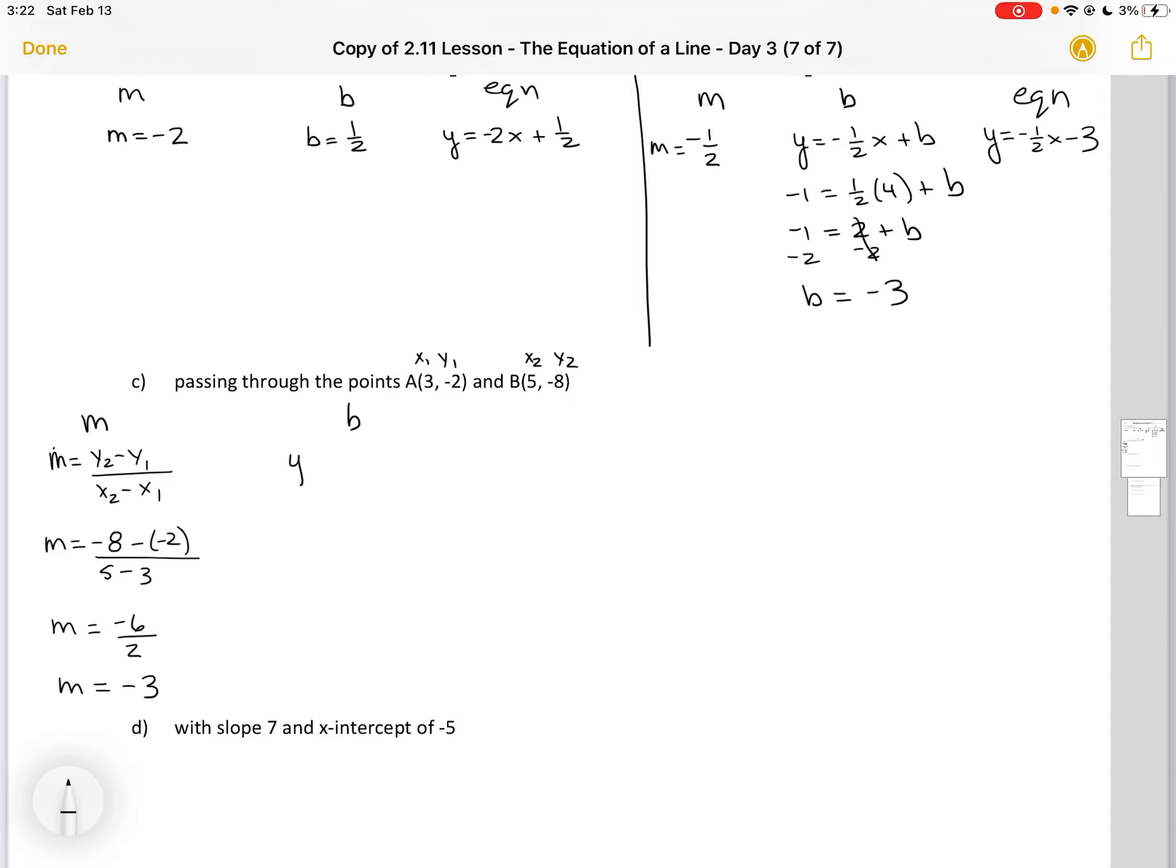I don't know what my y-intercept is in this case, but I can substitute in one of my points. I'm going to choose the point A again because the numbers are smaller this time than B. So minus 2 equals minus 3 times 3 plus b. Then I'm going to add 9 to both sides to get b by itself, which is going to leave me with b equals 7. Finally, I can write my equation as y equals minus 3x plus b.